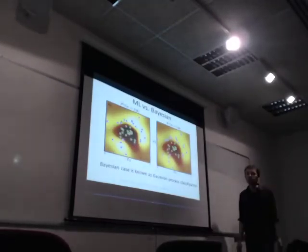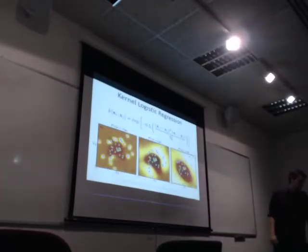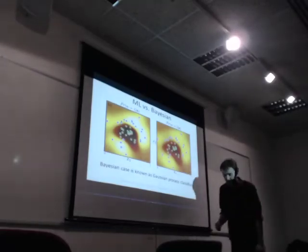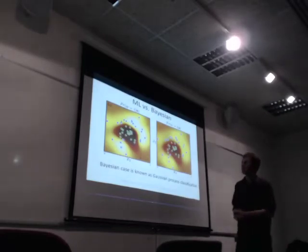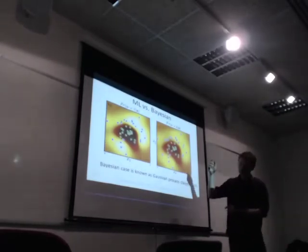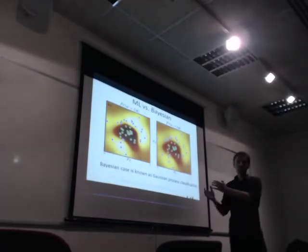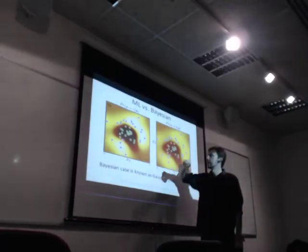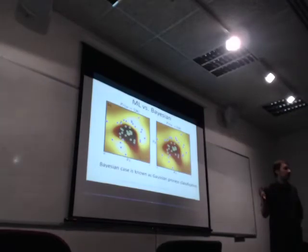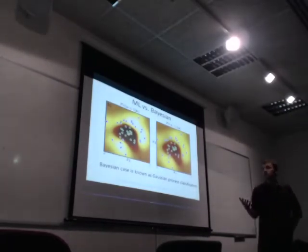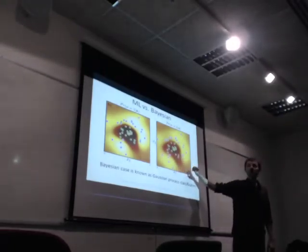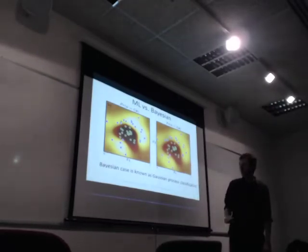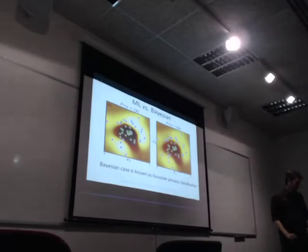Kernel logistic regression is also known as Gaussian process classification. When someone says 'Gaussian processes,' you've just seen them and basically used them. The difference between maximum likelihood and Bayesian is pretty subtle — they have essentially the same shape if you use the same lambda. But the Bayesian one is again less confident in places — more attracted to the data, and away from the data things fall off more quickly.